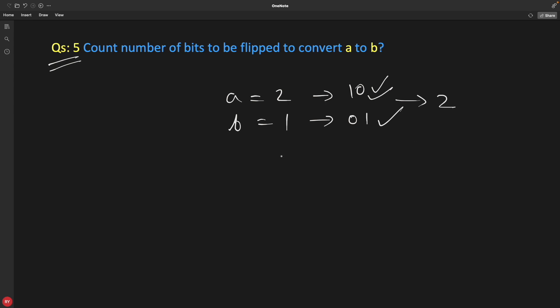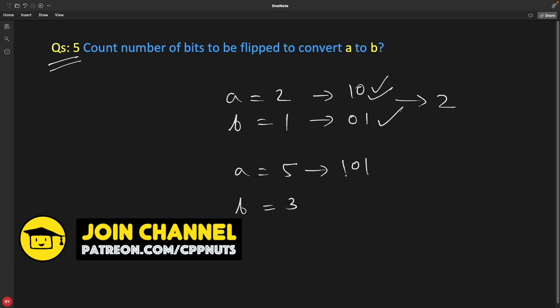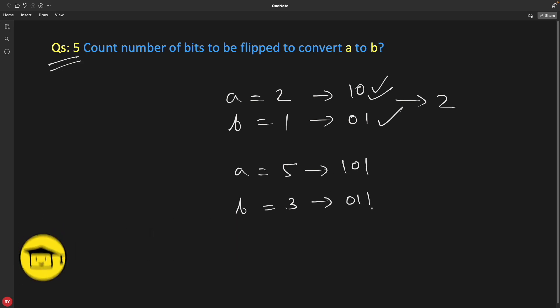Similarly, if your a is 5 and b is 3, let's see how many bits we have to flip. 101 is 5 and 3 is 011. These two are equal because we have to make this to this. So these two bits are equal. We have to change this and this. So total number of flipping required is 2. I think you would have understood the point.